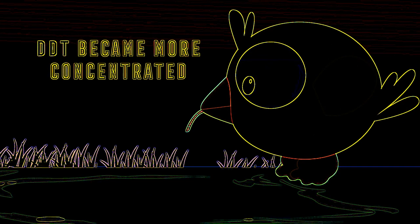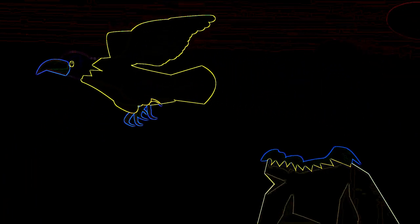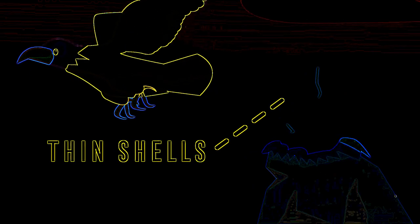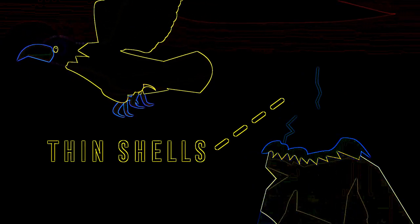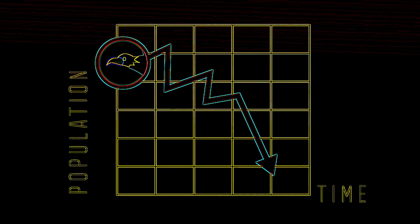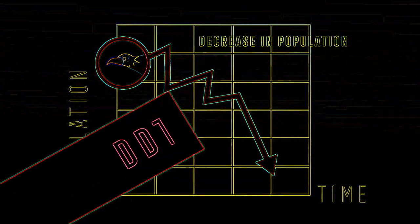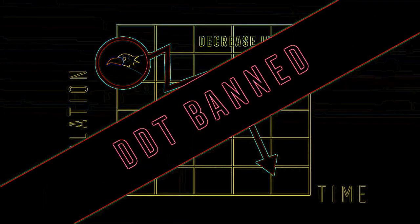The DDT became more concentrated in the higher levels of the food chain. The effect on birds of prey was catastrophic — it caused them to lay eggs with thin shells that broke easily when the birds incubated them. This led to a fall in the birth rate of birds of prey and a massive decrease in their populations. The use of DDT was eventually banned as a result.